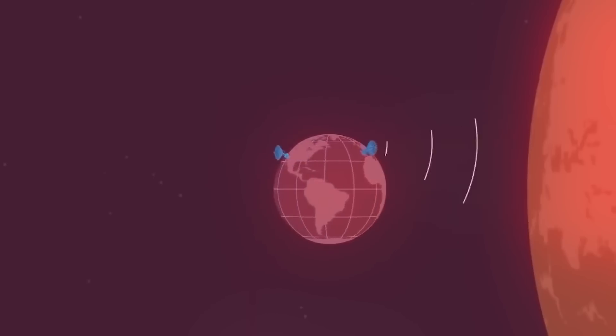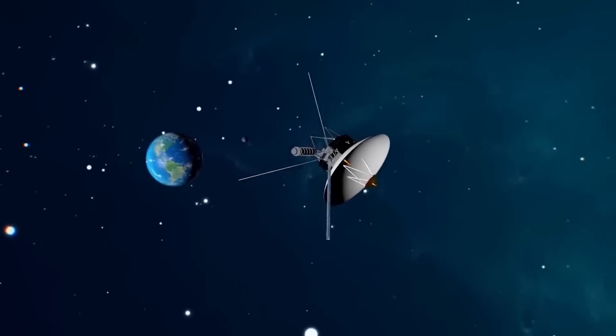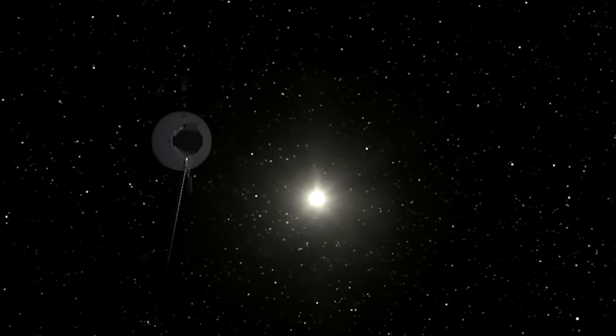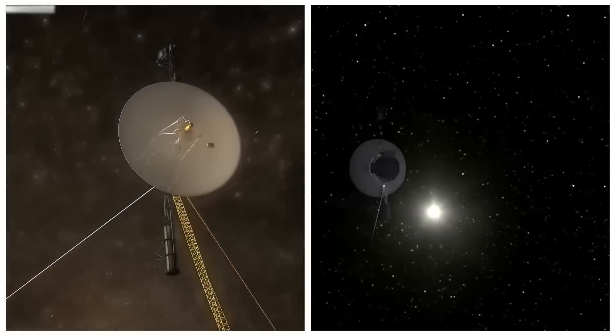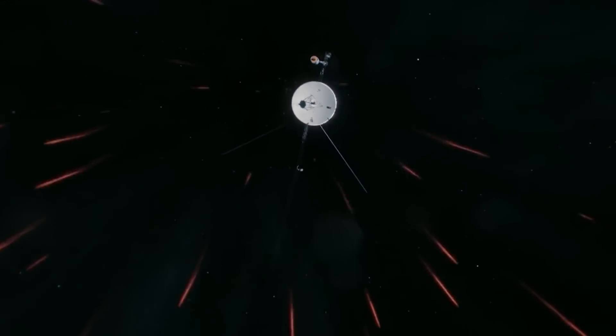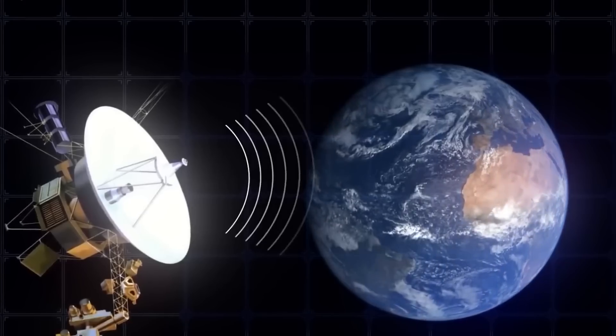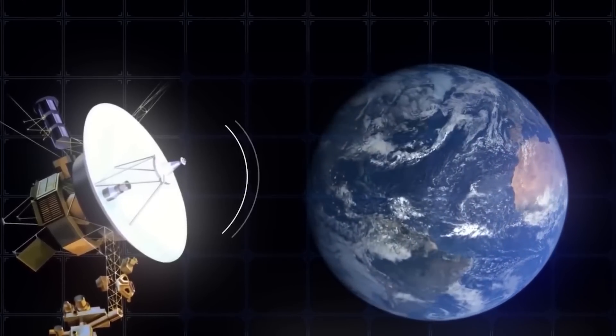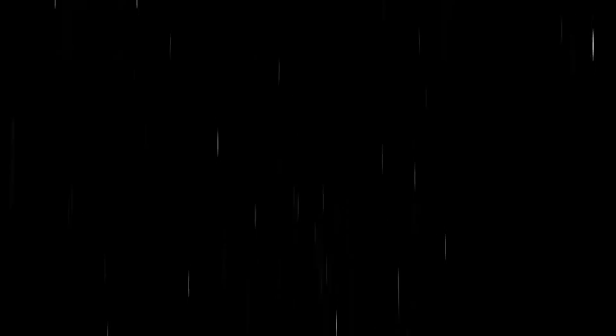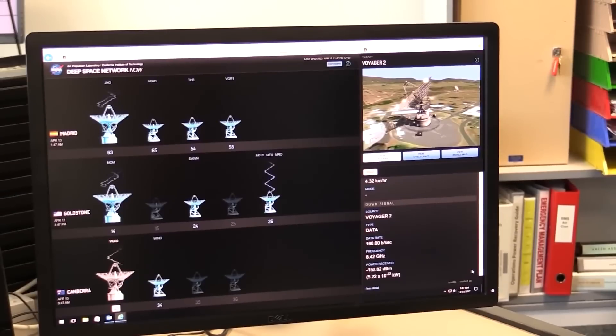Furthermore, the vast distance between Voyager 1 and Earth presents a significant hurdle in maintaining effective communication. As the spacecraft ventured into interstellar space, the strength of the signal it sends back to Earth weakened considerably. Currently, it takes over 21 hours for signals to travel from Voyager 1 to our planet. The weak signal, combined with interference from background noise, poses a substantial obstacle to successful data transmission and reception.